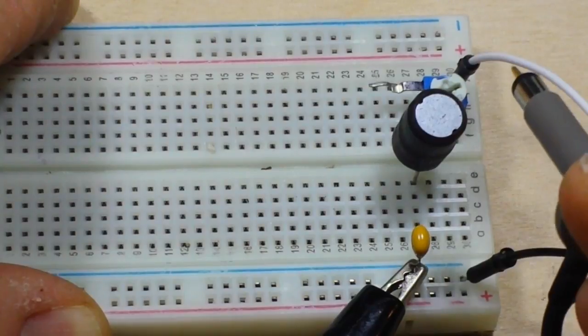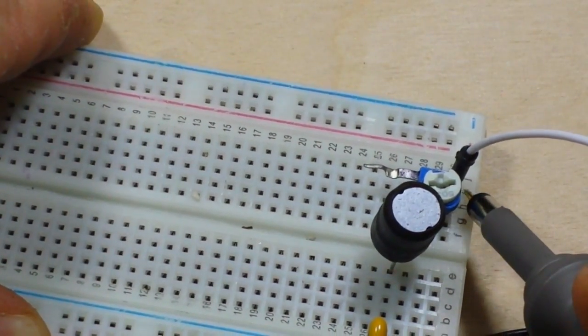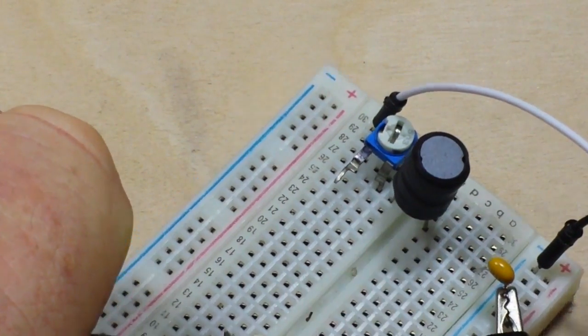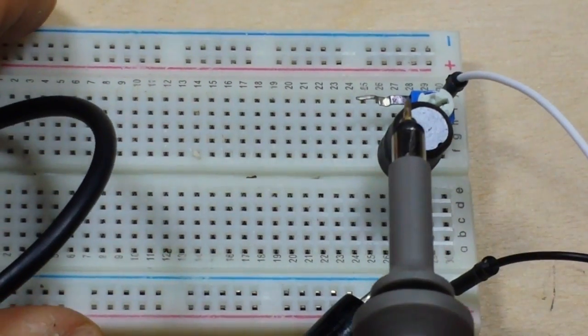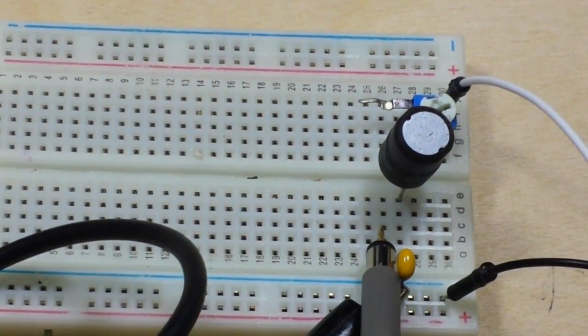So I've got the oscilloscope hooked up here. And I'm going to probe it in two places. I'm going to probe the input. And then I'm going to probe the output. And you'll be able to see the attenuation firsthand.